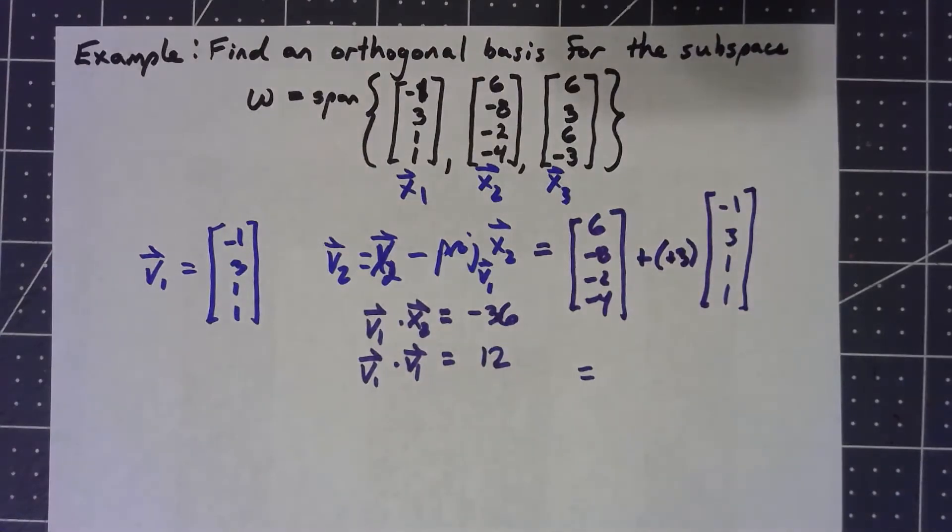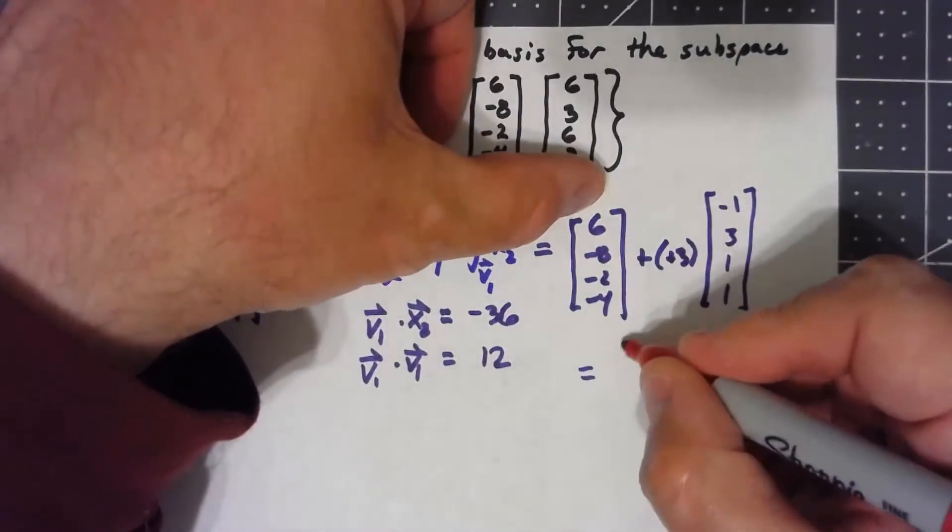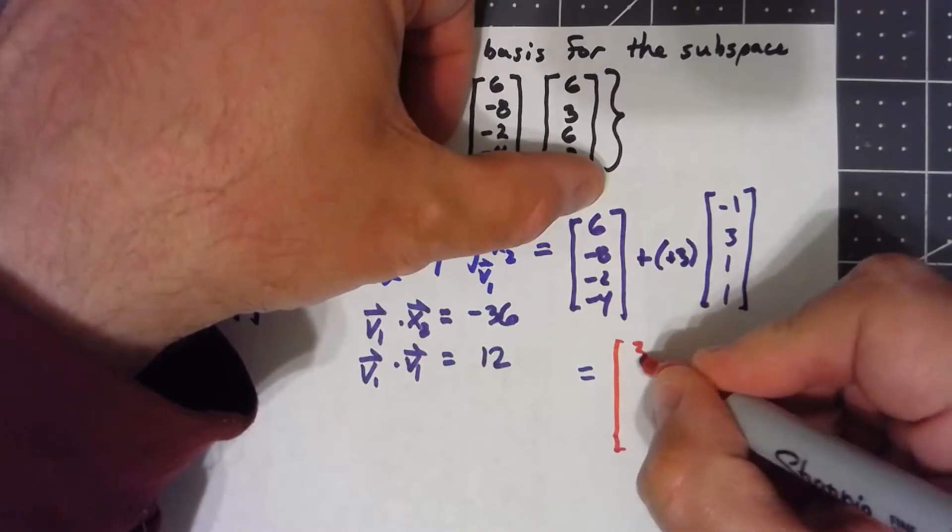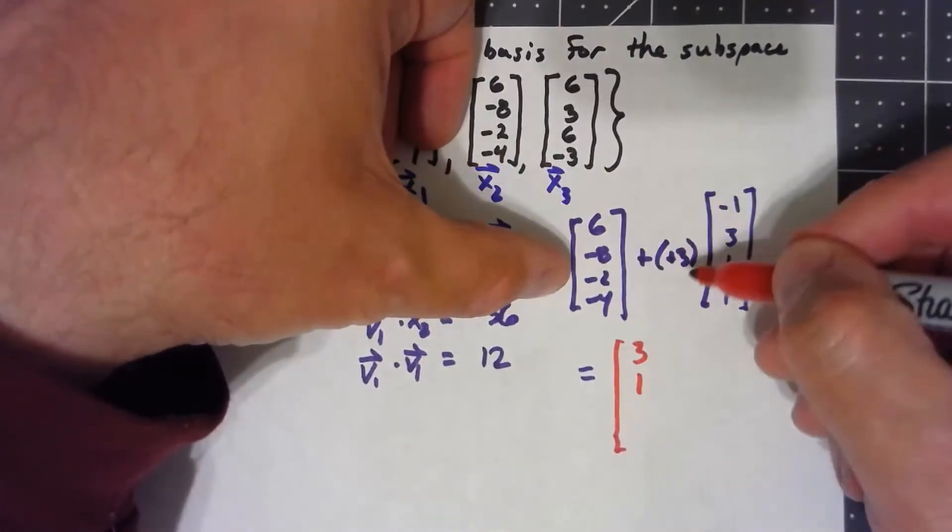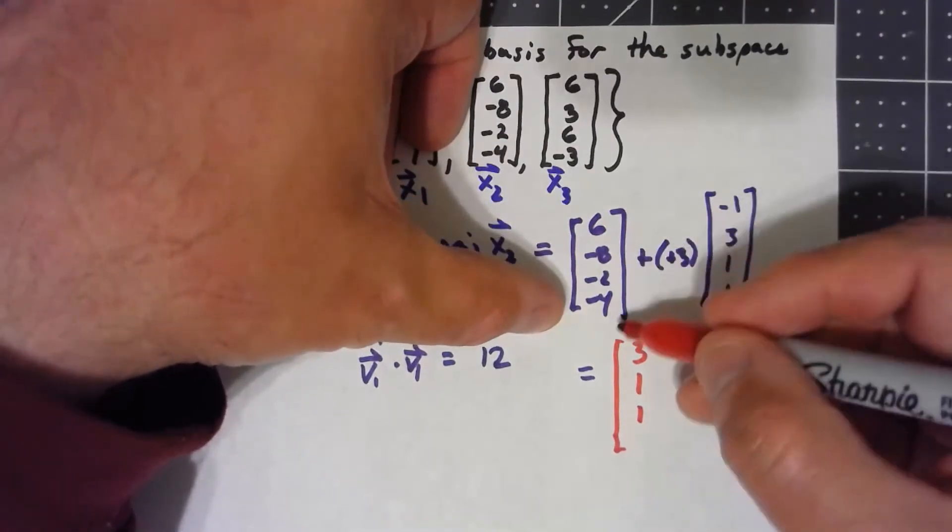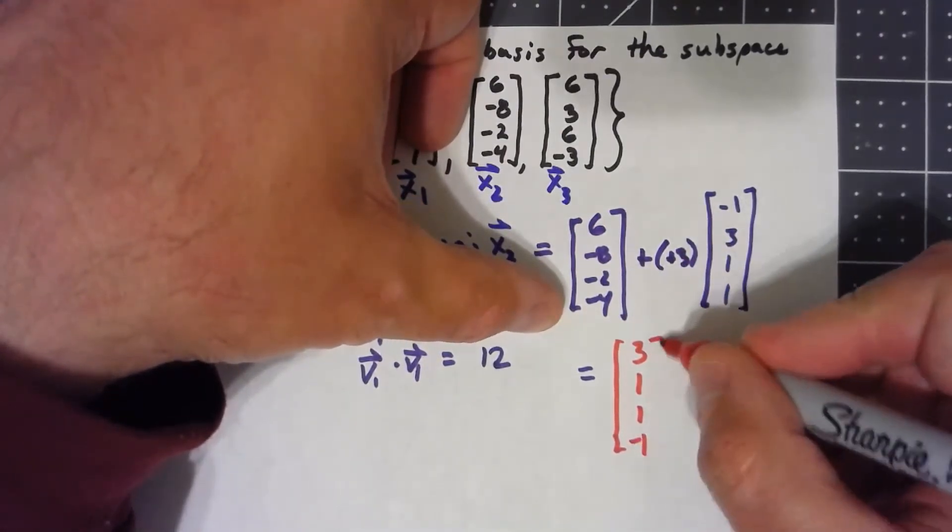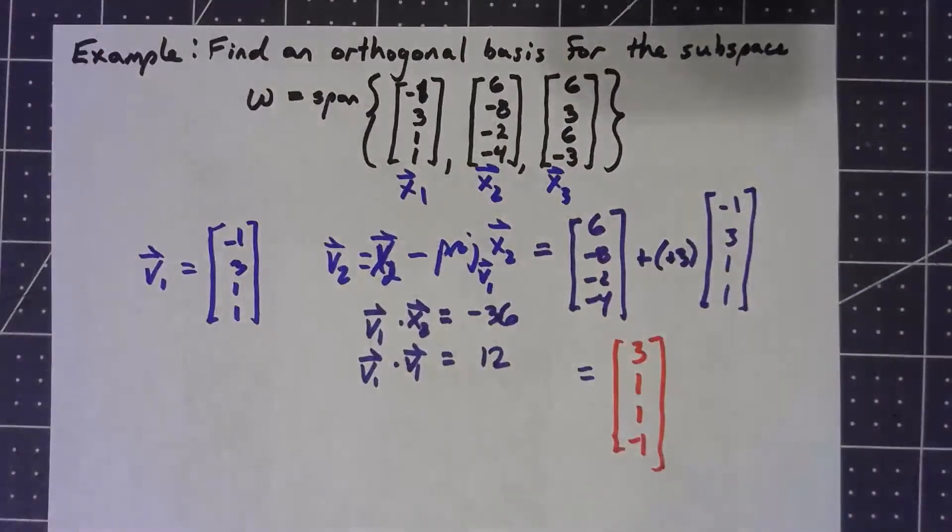Of course minus a negative is a plus. So my v2 vector, my second basis vector, is 6 minus 3, negative 8 plus 9, negative 2 plus 3, negative 4 plus 3. So far so good.